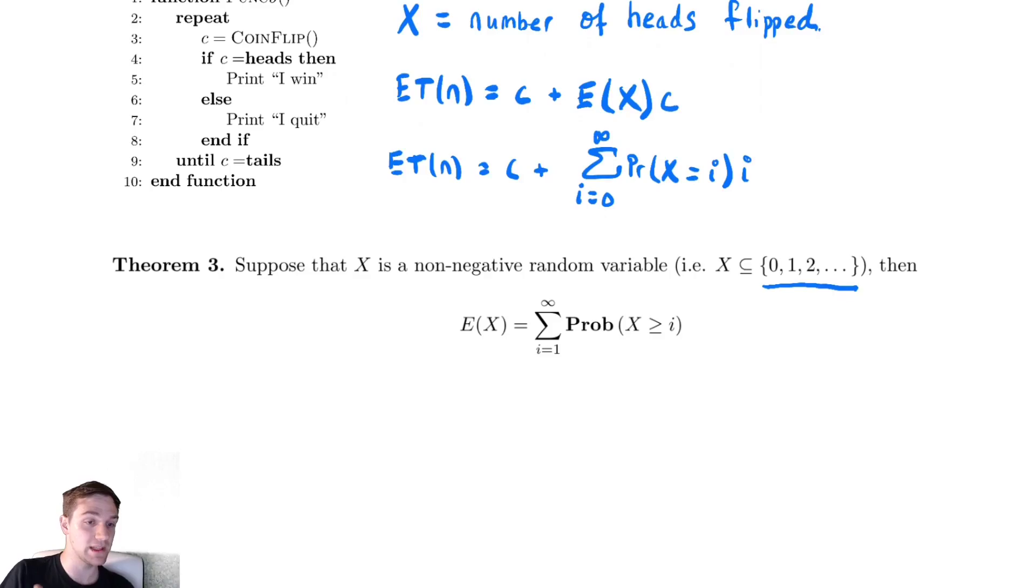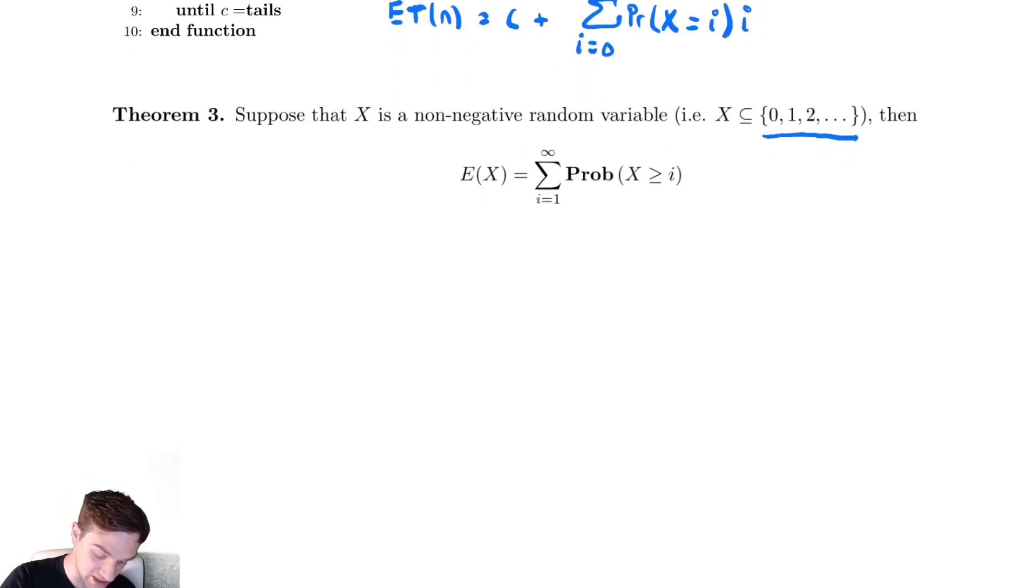Before we dig too deeply into using this theorem, let us try and prove it. It's actually not too bad. The expected value of x is equal to the sum from i equals 0 to infinity of the probability that x is equal to i times that value i.